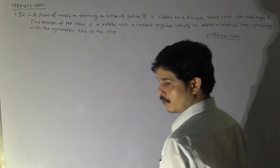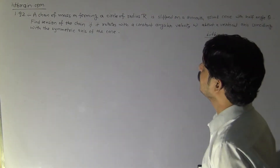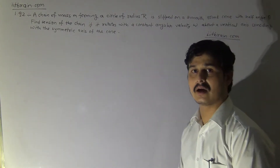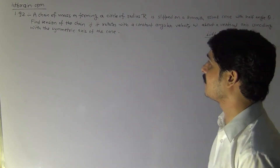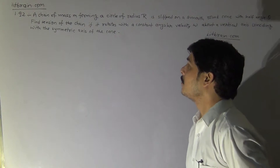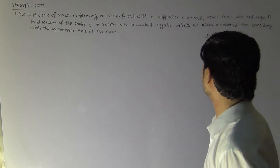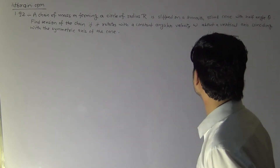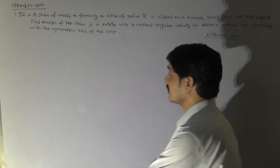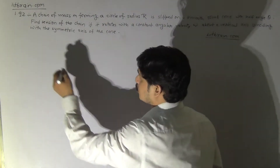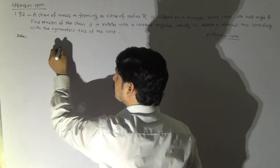Hello students. This is problem 1.92: a chain of mass M and forming a circle of radius R is slipped on a smooth round cone with half angle theta. Find the tension of the chain if it rotates with a constant angular velocity omega about a vertical axis coinciding with the symmetric axis of the cone. First, consider the diagram for this problem.